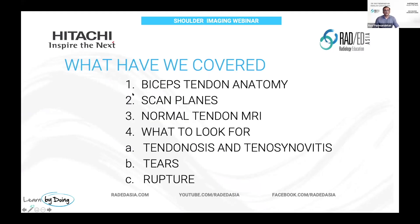So what we've covered today is the proximal tendon anatomy and the scan planes needed to assess various portions of that proximal tendon; what a normal tendon looks like — and this is really important, because if you don't know normal you cannot work out what abnormal is; and then what we look for in terms of tendinosis and tenosynovitis, tears, partial tears, and then ruptures.